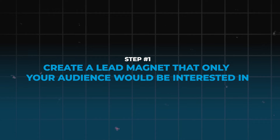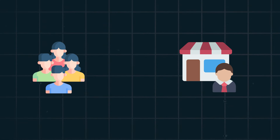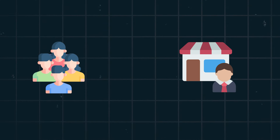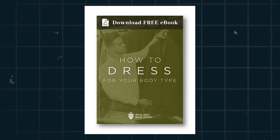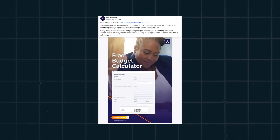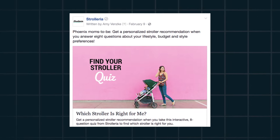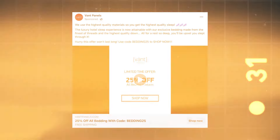The first thing you need to do to get high intent leads is to create a lead magnet that only your audience would be interested in. A lead magnet is a piece of content that your audience receives in exchange for giving you their contact information. A few examples could be a free ebook, a budget or cost calculator, a quiz that helps them determine something about themselves, or a discount code on their first purchase.